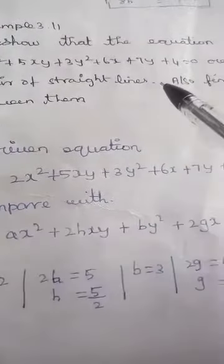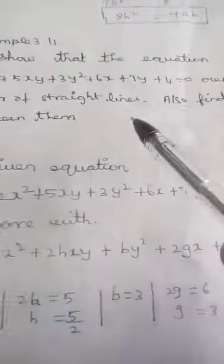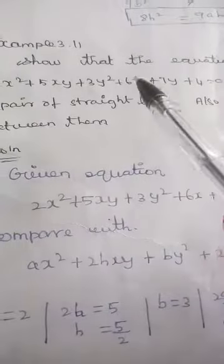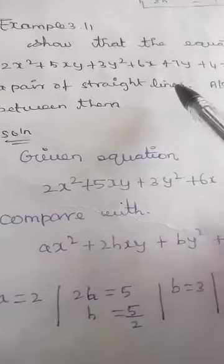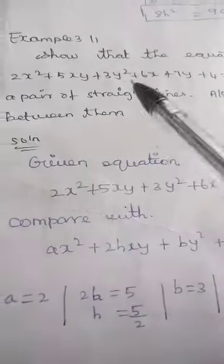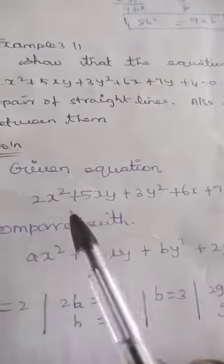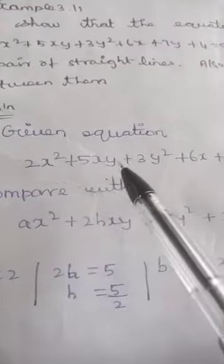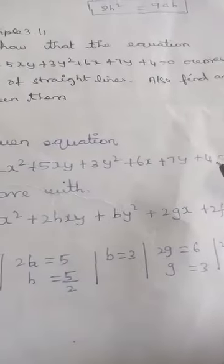This is a pair of straight lines. We need to find the angle between the pair of straight lines. Given equation: 2x² + 5xy + 3y² + 6x + 7y + 4 = 0.